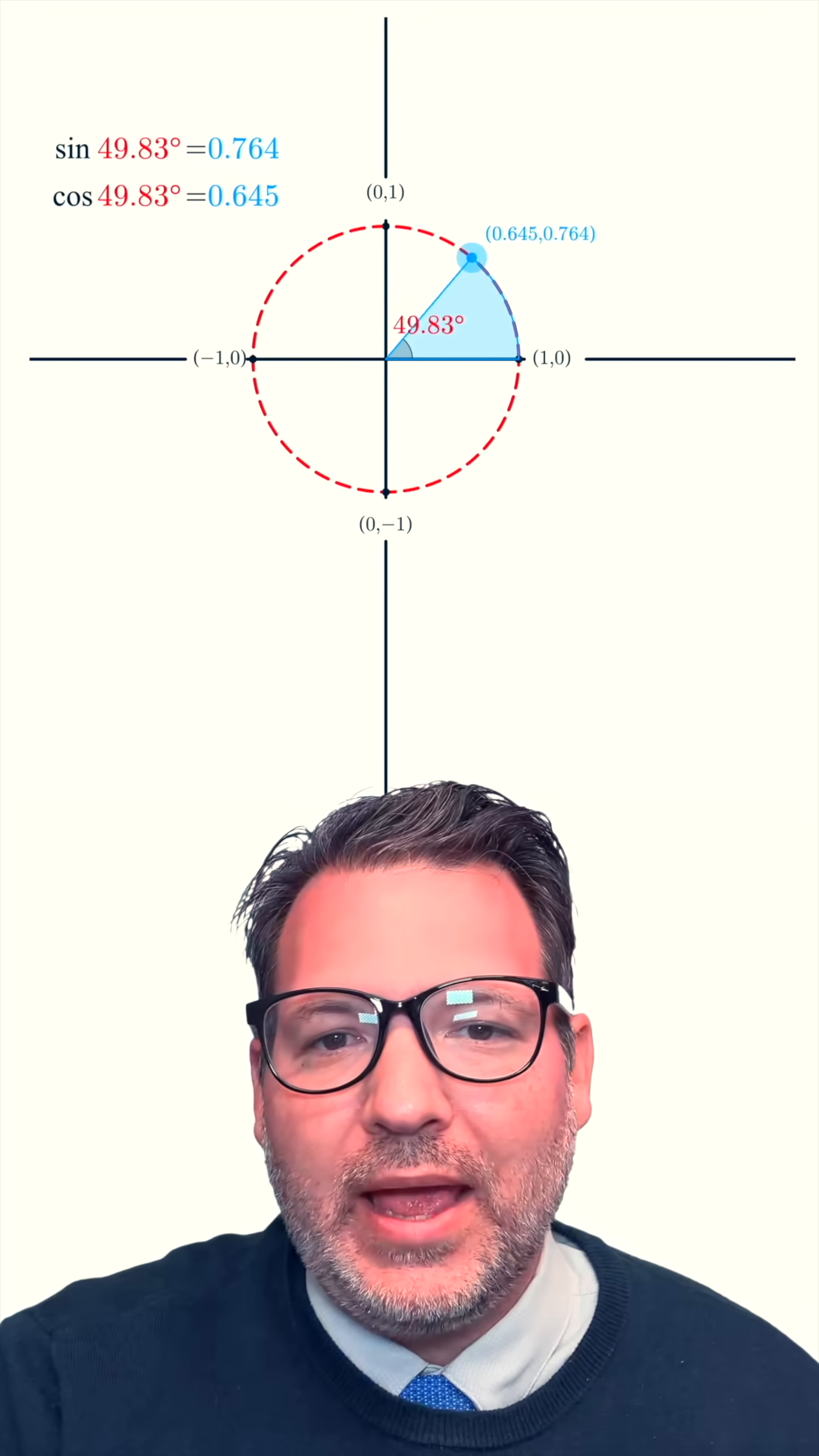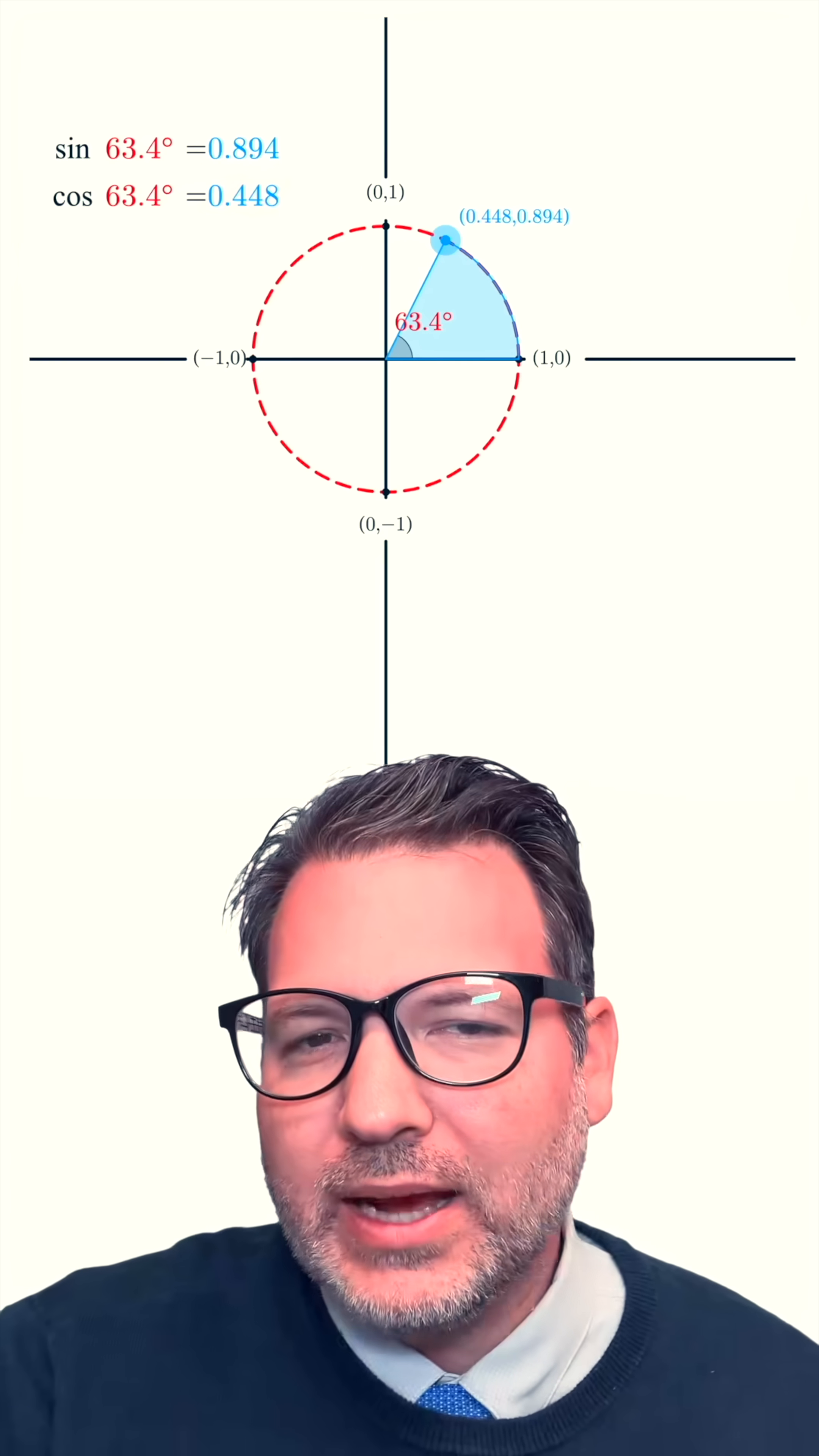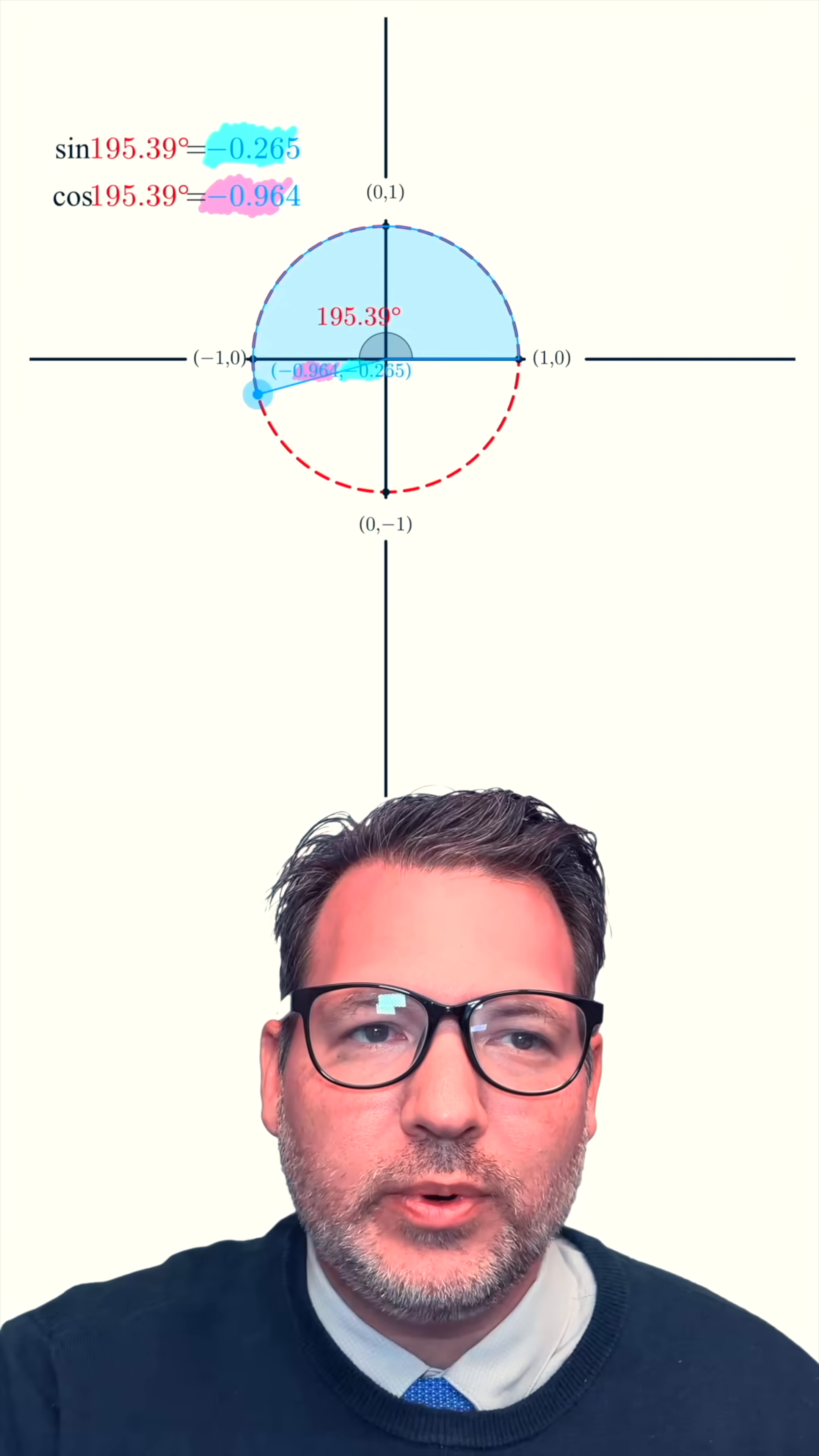But as we sweep out different angles within the circle, there's a funny connection you'll notice between that XY pair on the edge of the circle and the values for sine and cosine. As we sweep out different angles on this circle, we can see that the X coordinate for that ordered pair on the edge of the circle always corresponds to our cosine value.